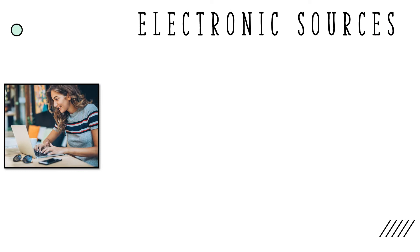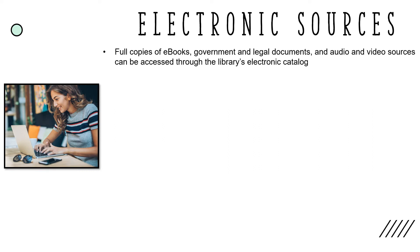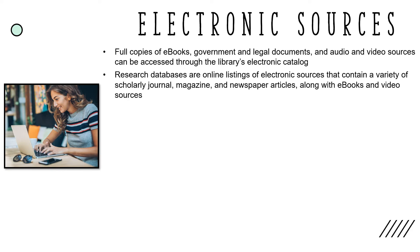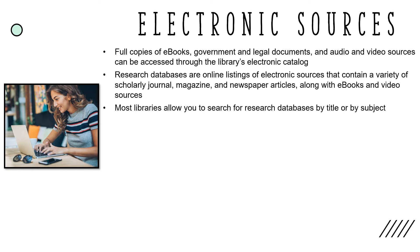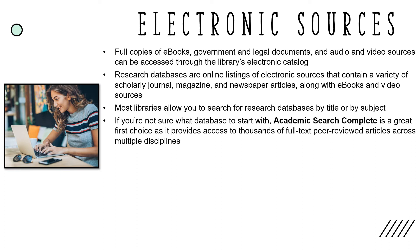Libraries also provide access to a wealth of electronic sources through the library's electronic catalog, research databases, and online subscriptions to journals, magazines, and newspapers. Sometimes full copies of e-books along with government and legal documents and audio and video sources can be accessed through the library's electronic catalog without having to visit the library in person. Research databases are online listings of electronic sources that contain a variety of scholarly journal, magazine, and newspaper articles, along with e-books and video sources. If you're not sure what database to start with, Academic Search Complete is a great first choice as it provides access to thousands of full-text, peer-reviewed articles across multiple disciplines.